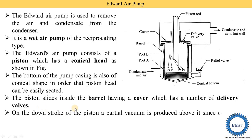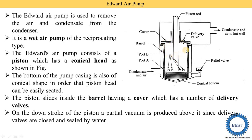On the downstroke of the piston, a partial vacuum is produced. When the piston starts to move in the downward direction, a vacuum is created inside the barrel. When this vacuum is created, the delivery valve is closed, and it is sealed by the water — the condensate and water present there covers the delivery valve.